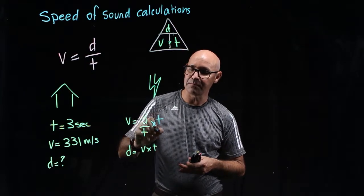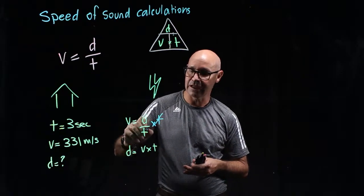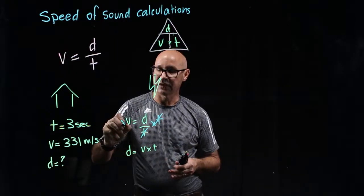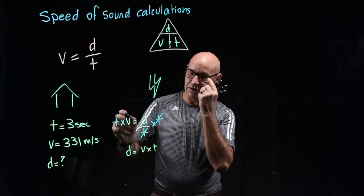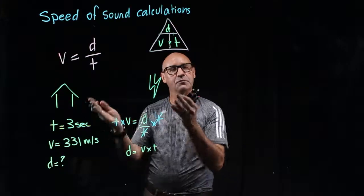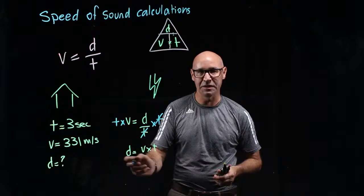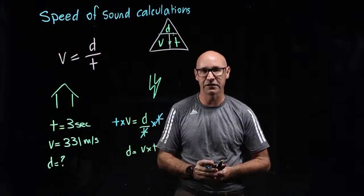So, we times it by T, and that means we can cancel it out. Now, what we do on this side, we have to do on the other side. So, now we've got D equals V times T. The only difference is we flip it around. So, that's two ways of manipulating the equation, so we have D by itself.